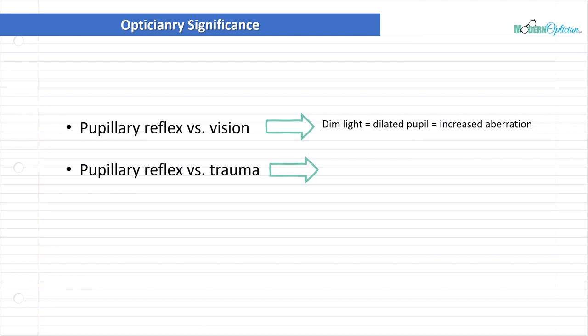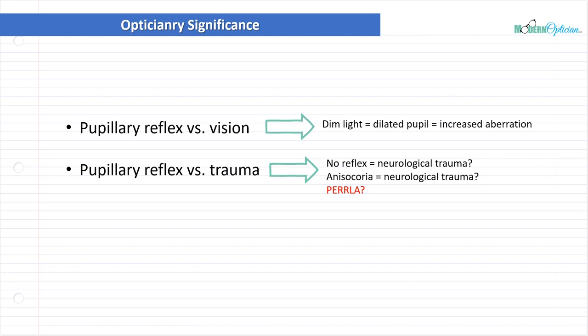We also discussed pupillary reflex versus trauma. We're not trauma experts, but if there is no reflex or if there's anisocoria, we have to wonder: is there some kind of brain injury? If it's sudden onset, we absolutely should be referring. In ophthalmology and at the assessment stage, we use PERLA — an acronym meaning the pupils are Equal, Round, Reactive to Light and Accommodation. This simple flashlight test checks all the neurological pathways related to the pupil and is a routine part of screening to ensure the iris and pupil are functioning properly.